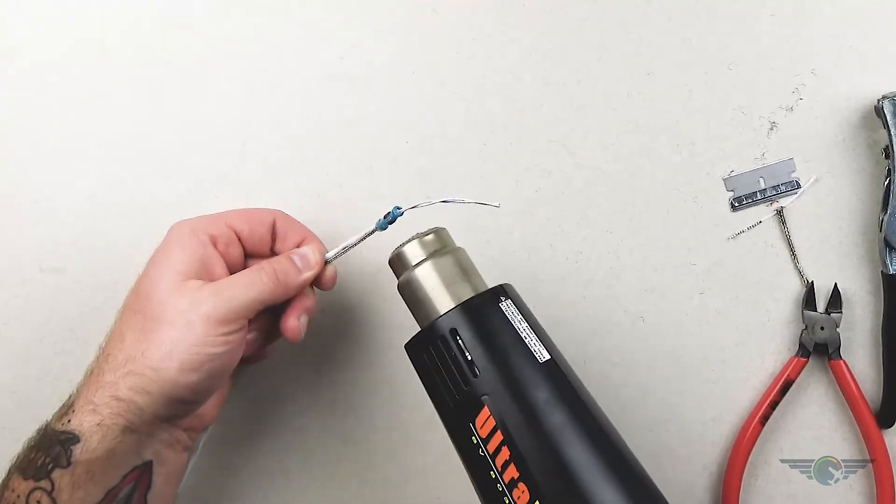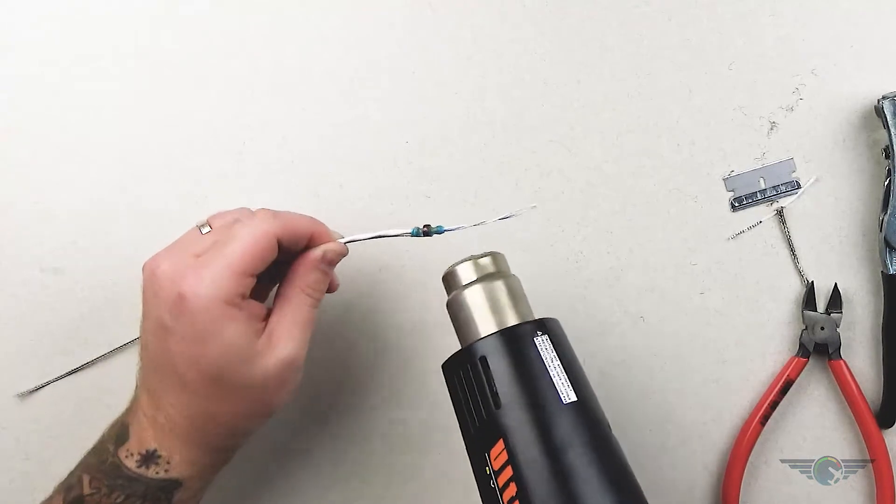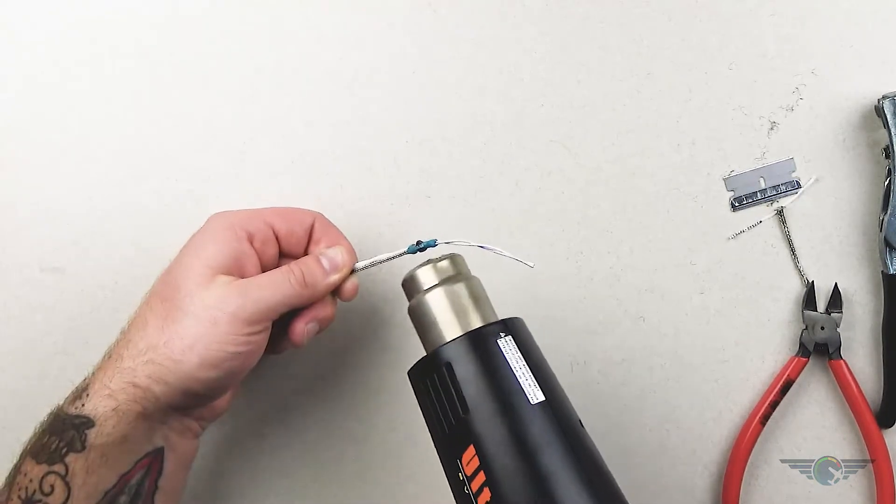There's the heat shrink portion collapsing, but we see that metal band is still intact. Just keep applying your heat, and there it started to collapse.